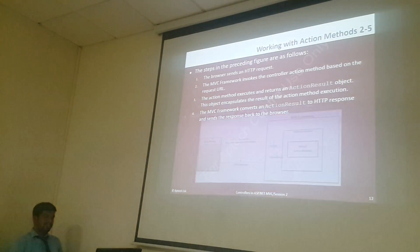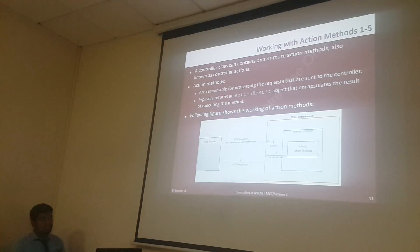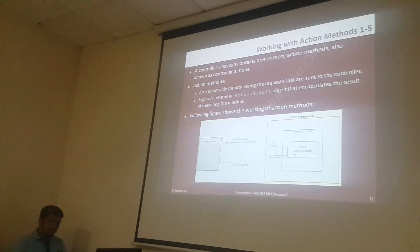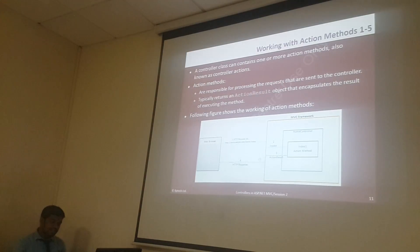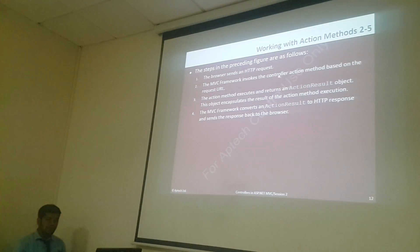So, the steps they are showing in this image: first step — from the web browser, and second step — the MVC framework will invoke the Home controller's Index method. Index method as a response returns some values. The browser sends an HTTP request; after that the MVC framework knows the controller's action methods based on the URL. So if you are writing slash Home, it will call Home's Index method.